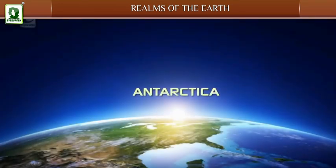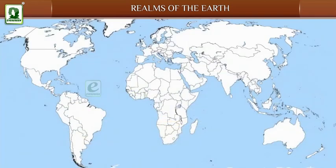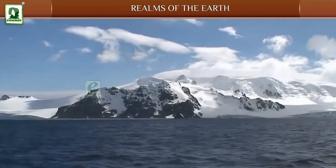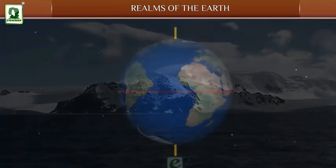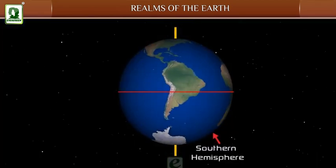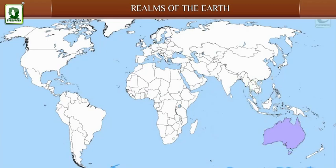Antarctica: Antarctica, also called the white continent, lies completely in the southern hemisphere. It is the second smallest continent in the world after Australia. It covers the South Pole, lies in the Antarctic Circle, and is surrounded by the Southern Ocean.